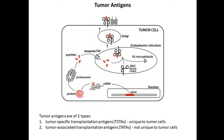Another category of antigens are called tumor associated transplantation antigens. These are not unique to tumors. Some proteins which are expressed at a particular level in normal cells, when they start to express at a very high level, can be categorized as tumor associated transplantation antigens. These antigens are present in normal cells, but in cancer they start to express in an abnormal manner, and because of this abnormal expression they are recognized by the immune system as foreign, which then targets the cells expressing these antigens.